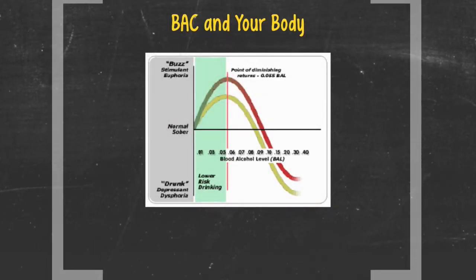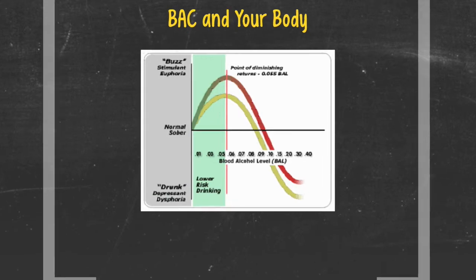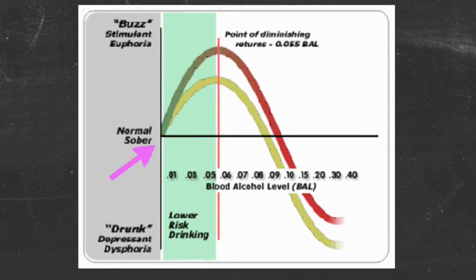BAC and your body — this is how different BACs can affect your night out. This is your baseline; no alcohol has entered the system. You can either go above your baseline, which is the positive side of drinking — you feel euphoric and buzzed — or you can go below your baseline to the negative effects of alcohol. This peak is the sweet spot, the point when people feel the best when drinking. This is the BAC of .055, but we'll round up to .06.